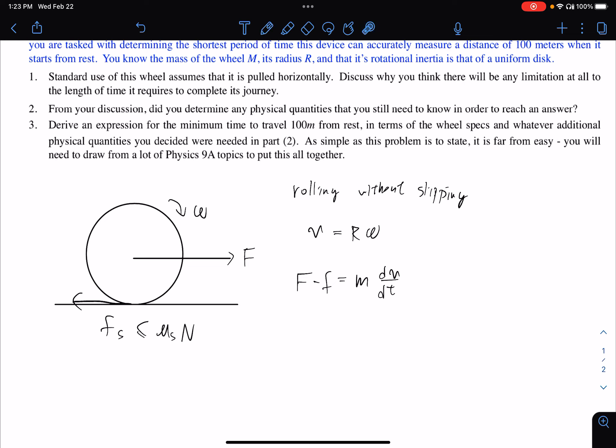The friction will cause a torque that generates the angular acceleration for the wheel to catch up with the speed. So this is the torque which is the static friction times radius equals the moment of inertia times the angular acceleration.